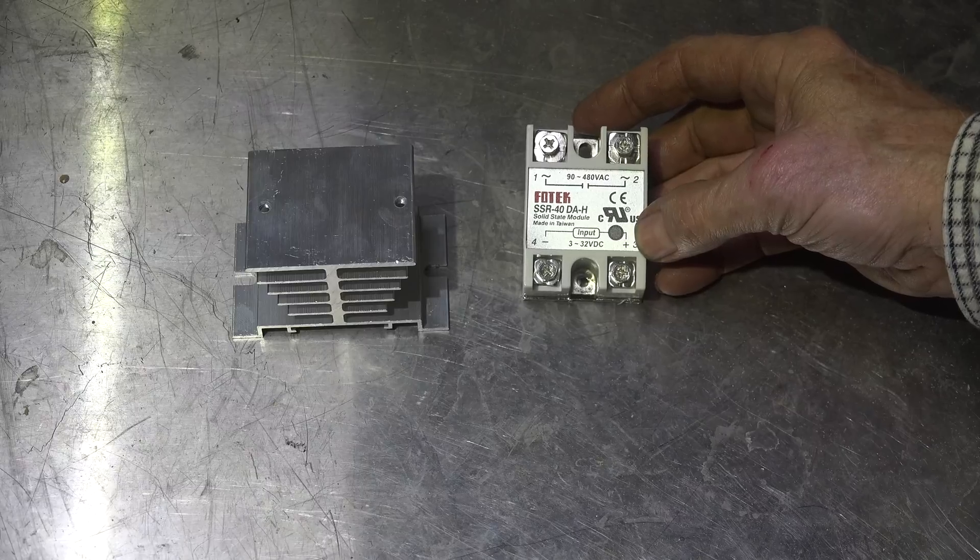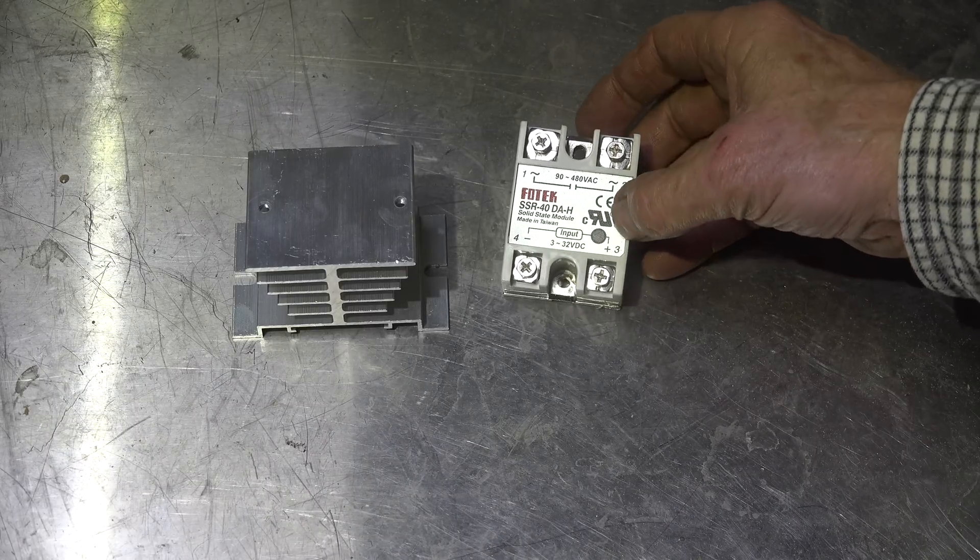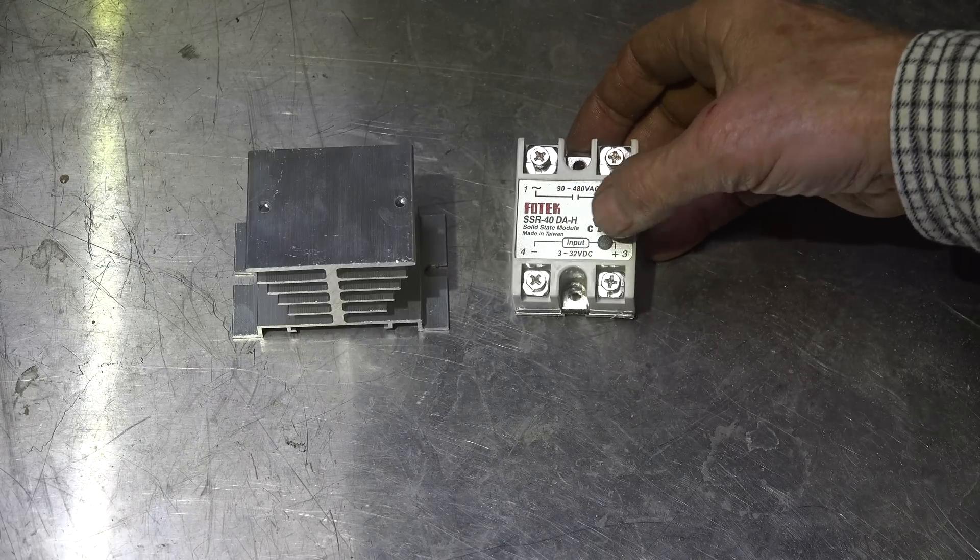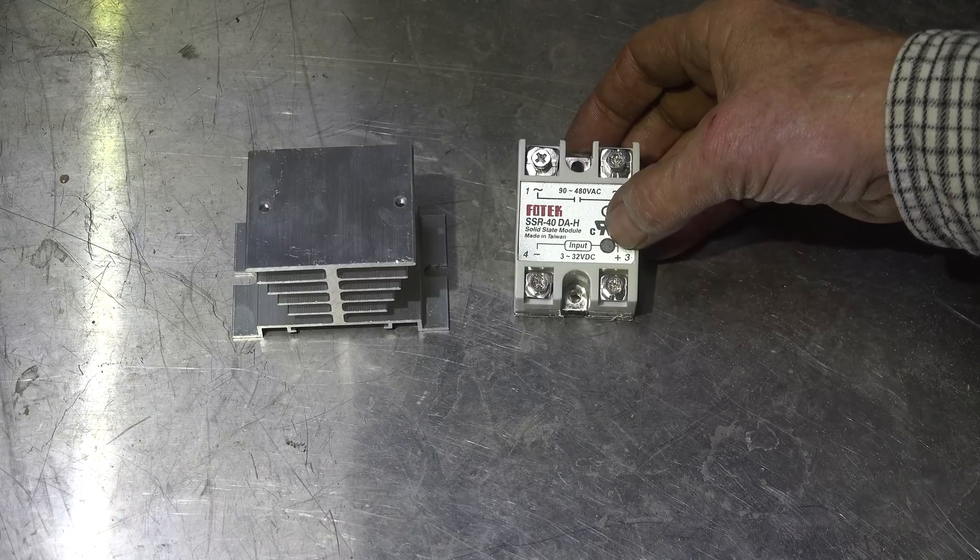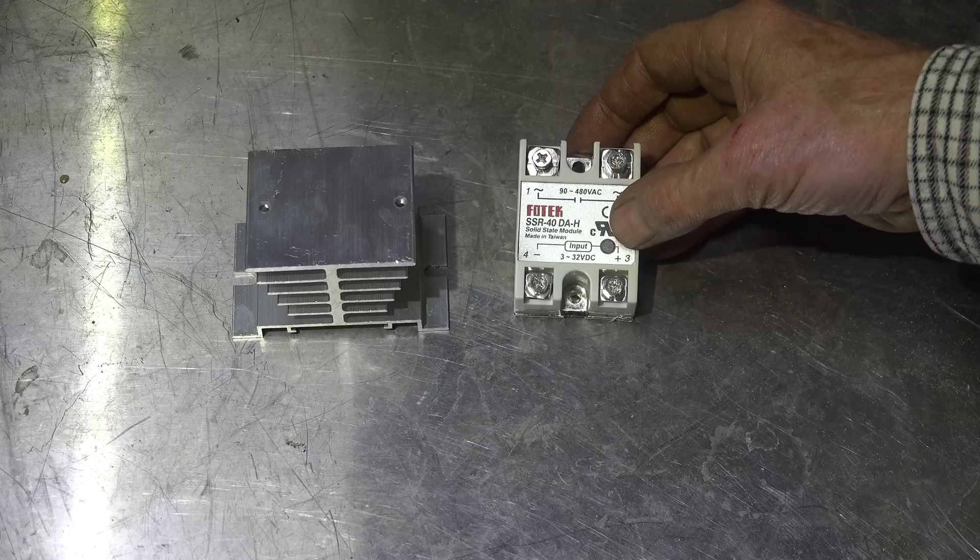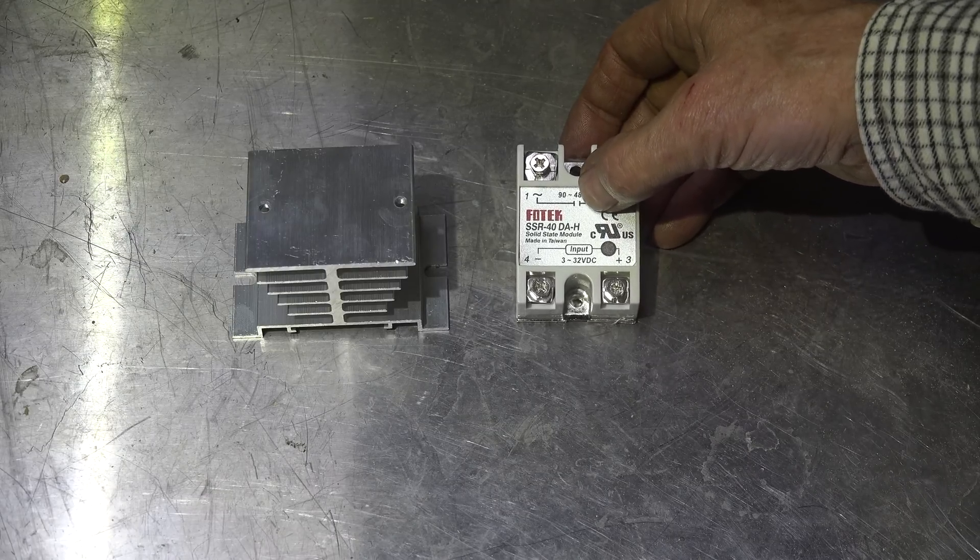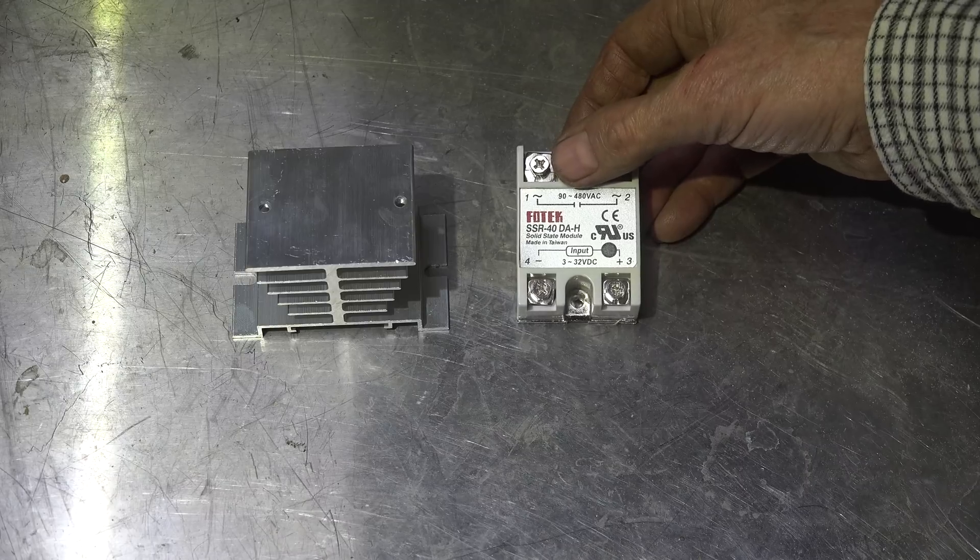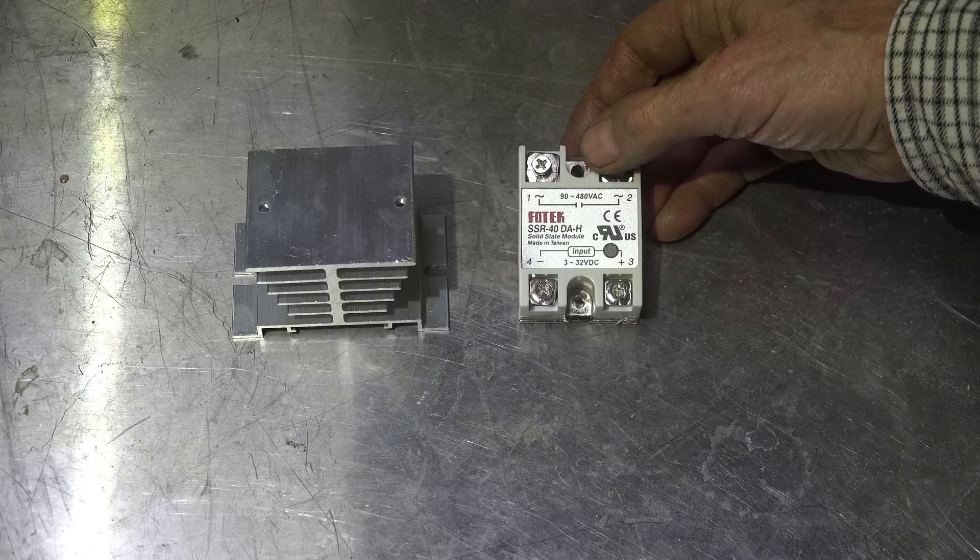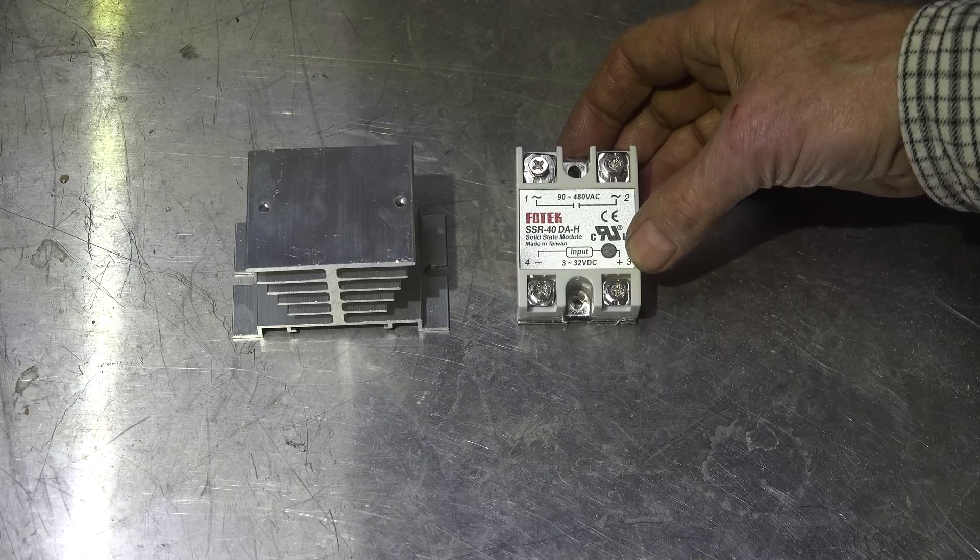A couple other things about this: you can run DC into this and it will energize. That little light right there will come on. If I put power into this thing, it will energize anywhere from 3 to 32 volts DC, and it will close a set of normally open contacts here from 90 to 480 volts AC. Like I said, it will handle 40 amps.